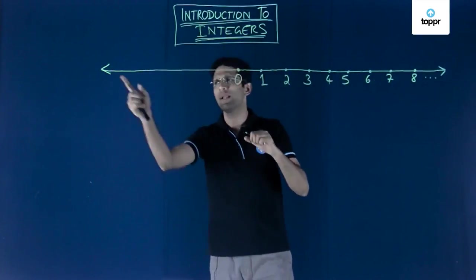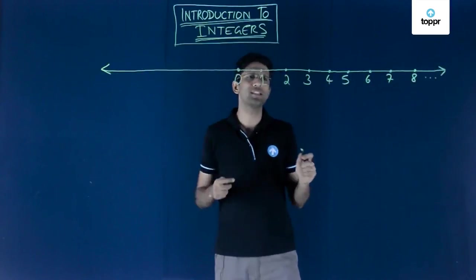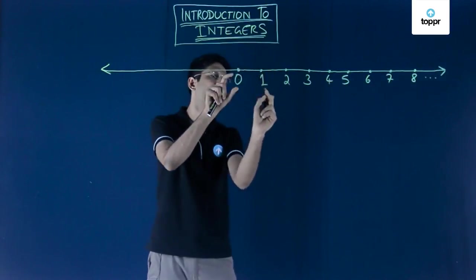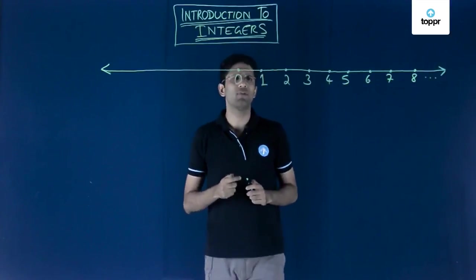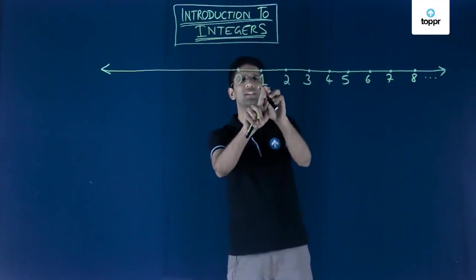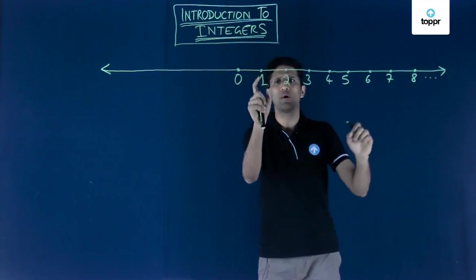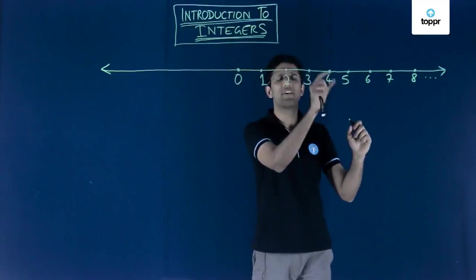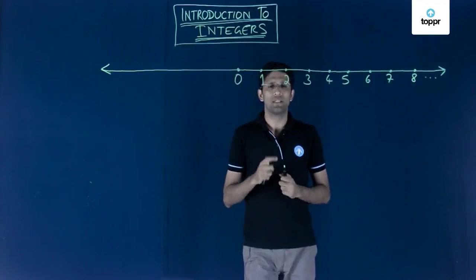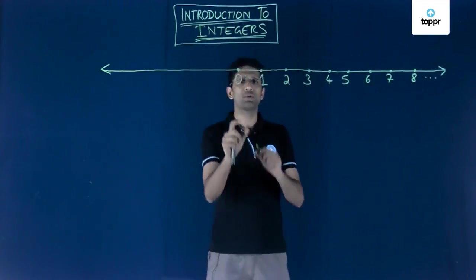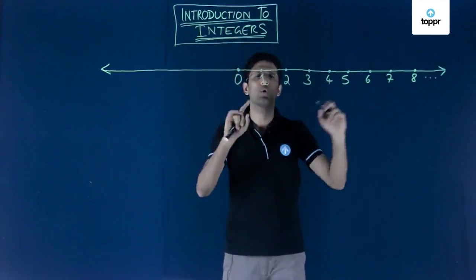This is my number line that extends on both sides, and on this number line I have plotted the numbers 0, 1, 2, 3, 4 and such points. If you look at the points 1, 2, 3, 4, 5 and so on, all these points when combined make up the set of natural numbers. Similarly, if you also include 0, we get a list of what are called whole numbers.